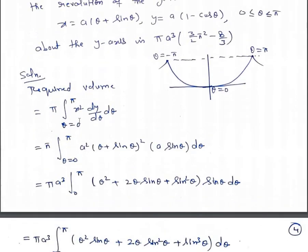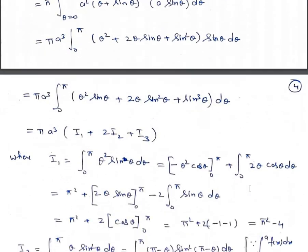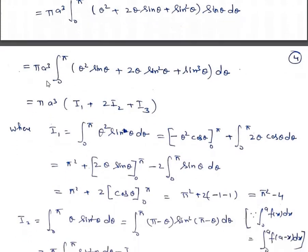Substituting values: x² = a²(θ + sin θ)² and dy/dθ = a sin θ. So the integral becomes πa³∫[0 to π] (θ + sin θ)² · sin θ dθ. Expanding: πa³∫[0 to π] (θ² sin θ + 2θ sin²θ + sin³θ) dθ.